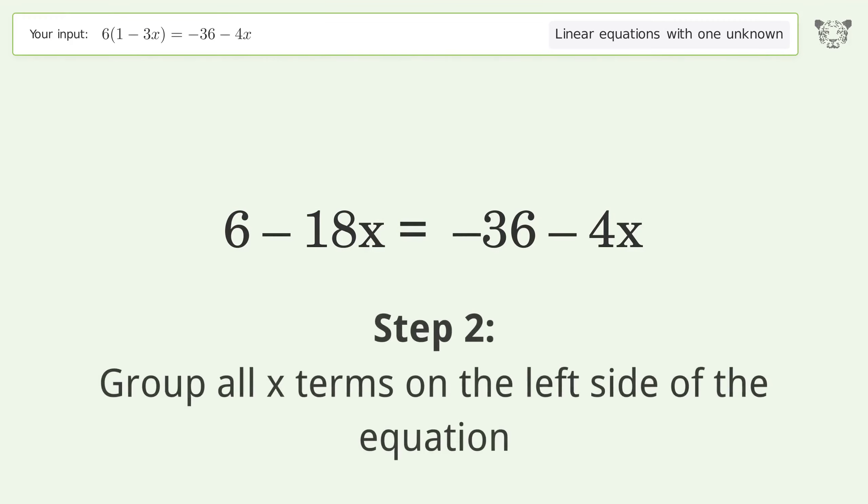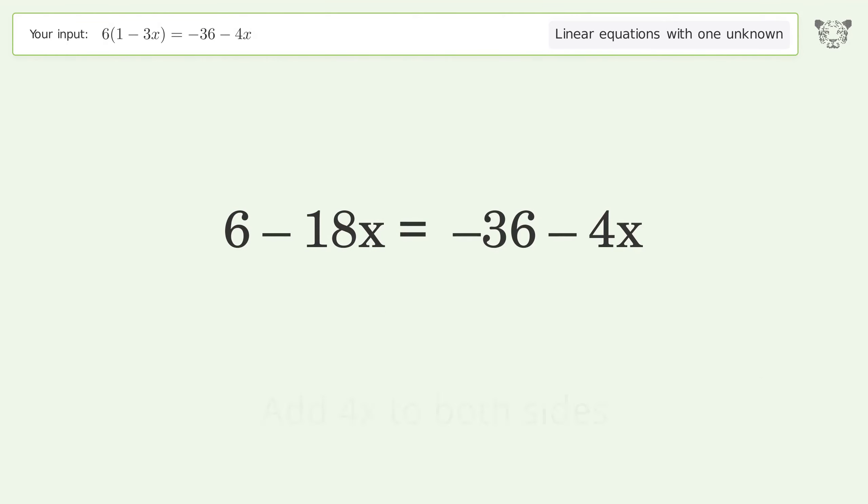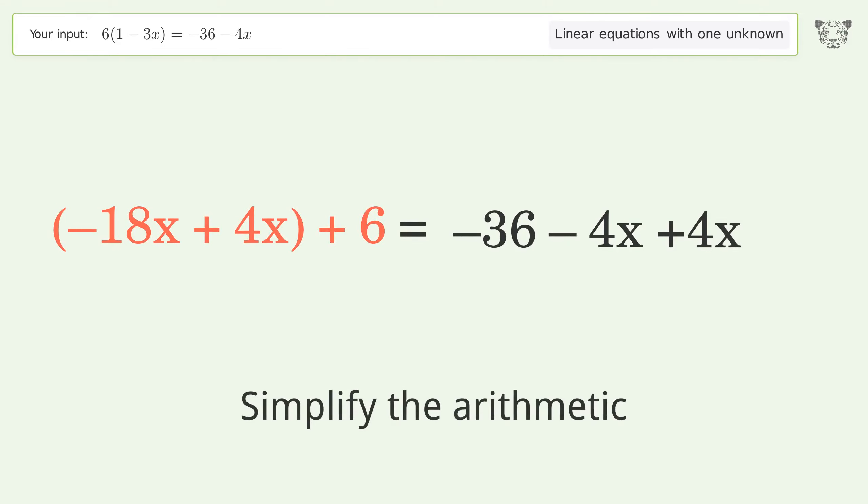Group all x-terms on the left side of the equation. Add 4x to both sides. Group like terms. Simplify the arithmetic.